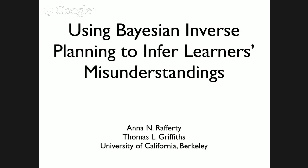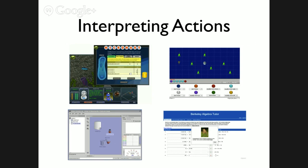I'm Anna Rafferty. I'll be presenting joint work with Tom Griffiths on using Bayesian inverse planning to infer learners' misunderstandings. We've heard today about the increasing number of interactive educational technologies where students use their knowledge while playing games, interacting with simulations in virtual laboratories, and completing other interactive activities. I'm interested in how we can diagnose students' understanding directly from these interactions, just as a teacher who observes a student can make fine-grained inferences about what the student has mastered and in what specific ways she might misunderstand.